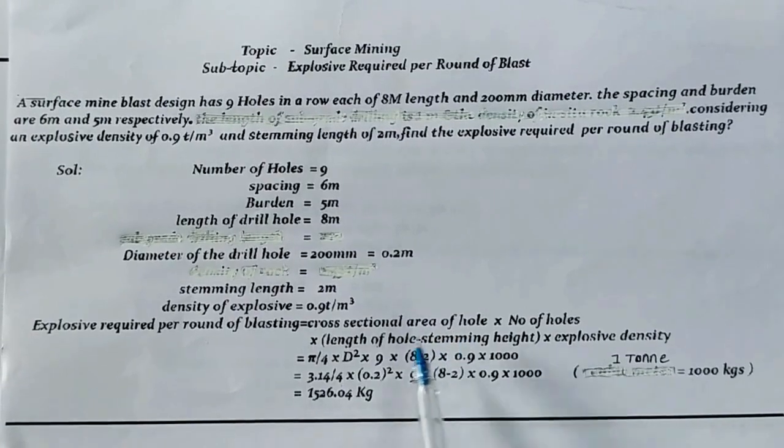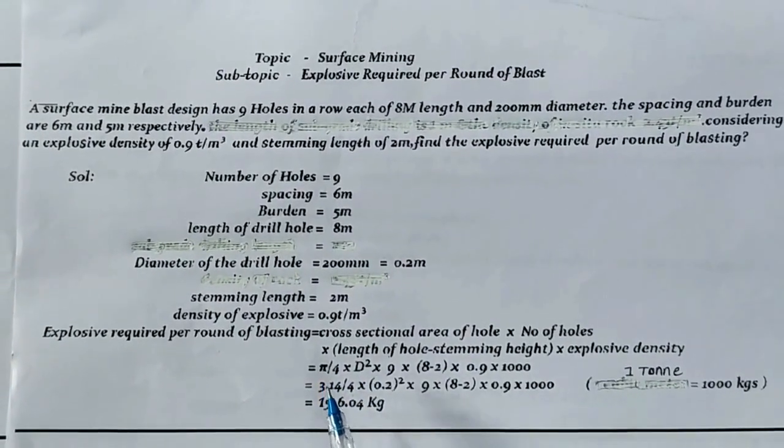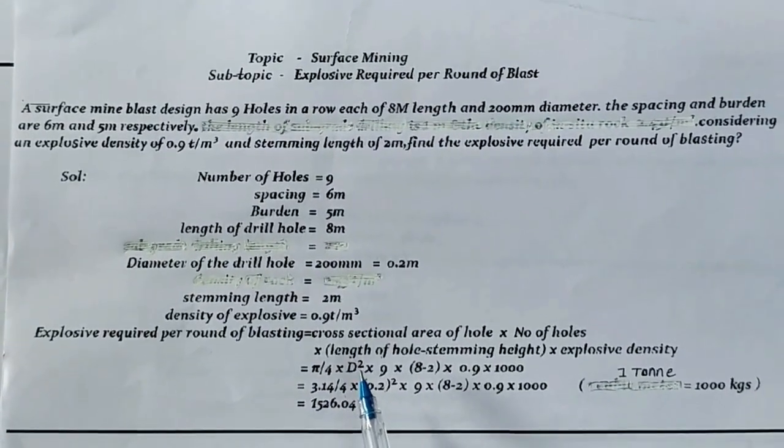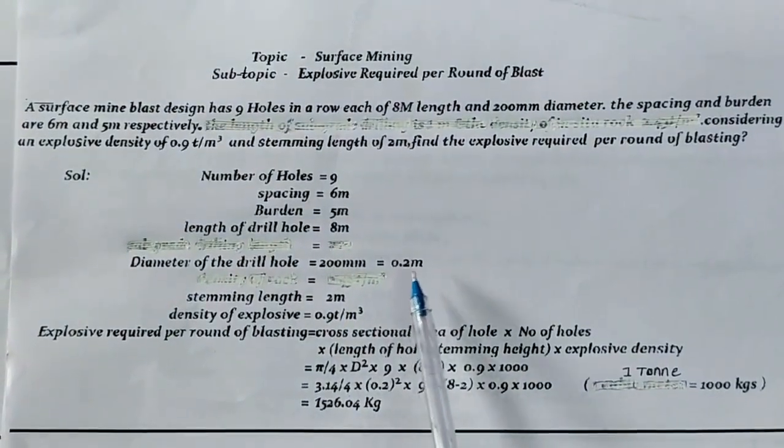Cross-sectional area of hole is π/4 × D². So π = 3.14 divided by 4, where D is the diameter. So 0.2 meters squared.